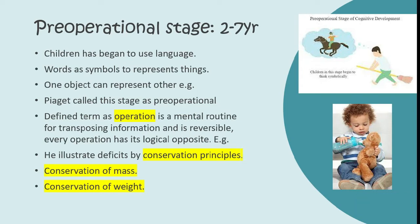One object can represent or symbolize another. For example, in play, a three-year-old may treat a stick as a horse, a wooden cube as a car, or if there are two dolls, she may consider one as a mother and the other as a baby.